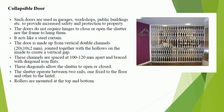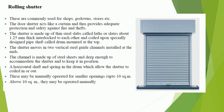The shutter operates between two rails, one fixed to the floor and other to the lintel. Rollers are mounted at the top and bottom. Rolling shutter: these are commonly used for shops, go-downs, stores, etc. The door shutter acts like a curtain and provides adequate protection and safety against fire and thefts. The shutter is made up of thin steel slabs called laths or slates about 1.25 mm thick, interlocked to each other and coiled upon a specially designed pipe shaft called a drum mounted at the top. The shutter moves in two vertical steel guide channels installed at their ends.